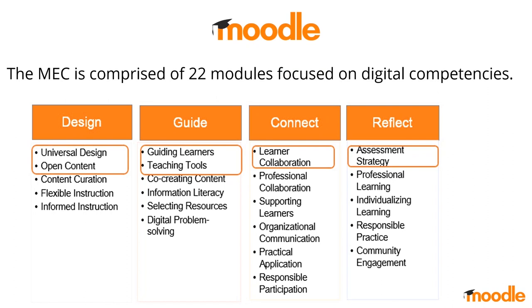What does the MEC program contain? The MEC program contains 22 modules, each focused on one digital competency — 22 big ideas created into 22 modules or courses. There are four teaching approach categories: design, guide, connect, and reflect. These are general teaching approaches that most educators use in their creation of learning content. Six of these are the initial foundational modules that will be part of our foundation-level certification program. The other 16 modules are coming to a Moodle partner near you in the near future as we roll them out.